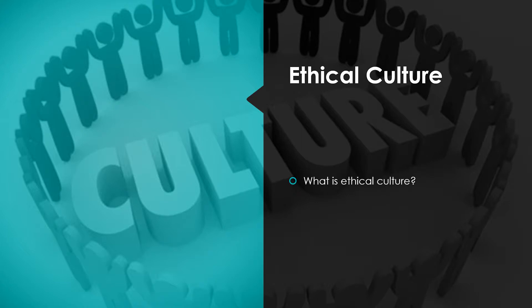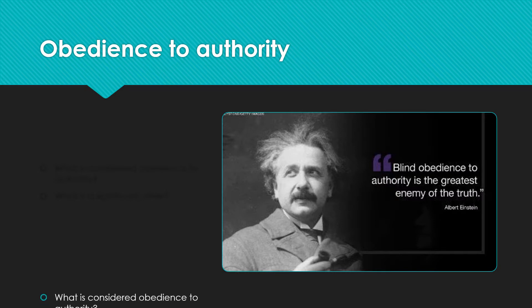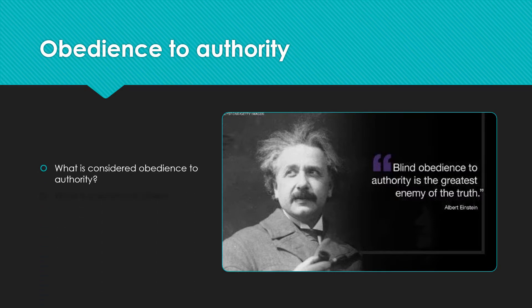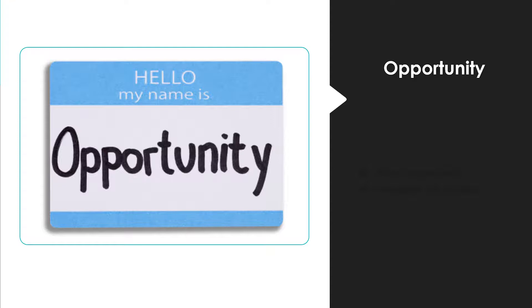What is ethical culture? Ethical culture reflects the integrity of decisions made and is a function of many factors including corporate policies, top management's leadership on ethical issues, the influence of coworkers, and the opportunity for unethical behavior. Obedience to authority helps explain why many employees resolve business ethics issues by simply following the directives of a superior. A significant other refers to those who have influence in a work group, including peers, managers, coworkers, and subordinates.